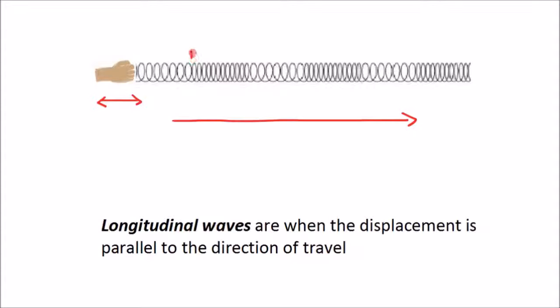Longitudinal waves don't have peaks and troughs, but they do have compressions, and the compression is where you see it's closer together, and they have what are called rarefactions, and that's where they are further apart there. So we don't have peaks and troughs with a longitudinal wave. We have compressions and we have rarefactions.